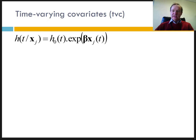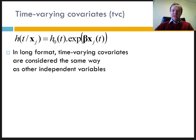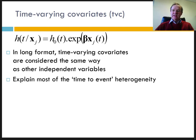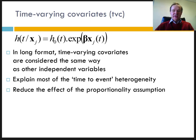The events experienced by the individual since birth or the beginning of observation, which may have influenced his chances of knowing the event studied, can also be introduced in the form of explanatory variables. These variables are then called time-varying covariates. In long format, the time-varying covariates are considered in the same way as the fixed variables, and their introduction has the effect of making the model more dynamic, since it makes it possible to closely follow the path of individual lives. These variables explain most of the heterogeneity of the time to event. Time-varying covariates also have the effect of reducing the effect of the proportionality assumption.